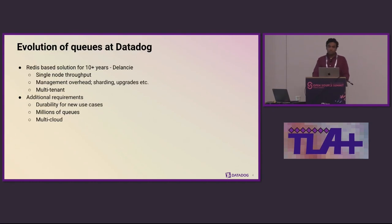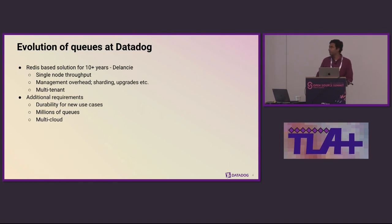Most of this discussion will be centered around a queuing system at Datadog called Delancey. Delancey is essentially our asynchronous job-running framework — one of the frameworks that Datadog built and uses, and it's been in use for over 10 years. Delancey uses a Redis-based solution for queuing. However, as the company and system grew, it was becoming inadequate for new use cases.